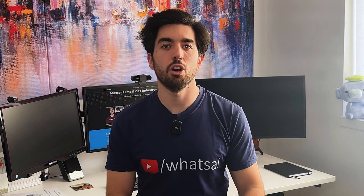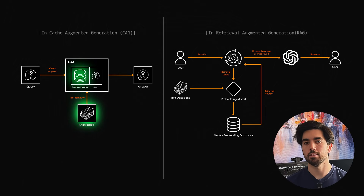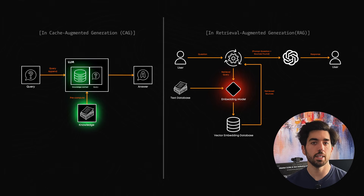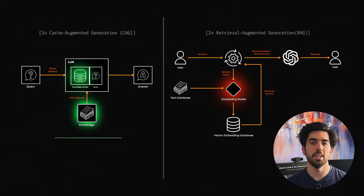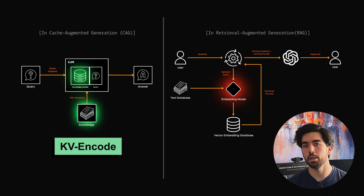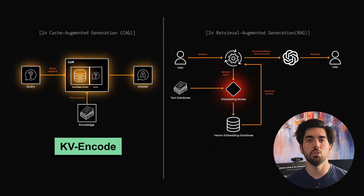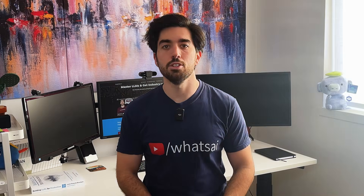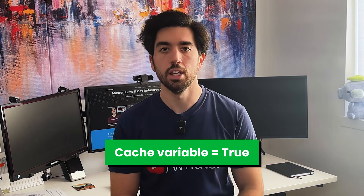For more technical viewers, here's how to build a CAG-based system. You start by pre-processing your entire knowledge base. Instead of creating embeddings like you would in RAG, you generate and save the model's internal representations — specifically the KV cache of your data. This is done through a process called KV encode in the original CAG paper, which transforms your text input into a format the model can instantly access. When a question comes in, the model directly uses this cached knowledge to answer with precision. You can also efficiently reset or update this cache whenever needed. In most cases, this is implemented by the LLM provider — as a user, you'll simply set a variable to enable caching and they manage the rest.